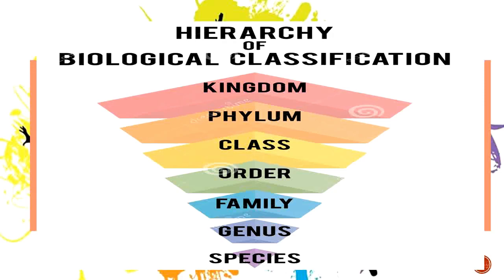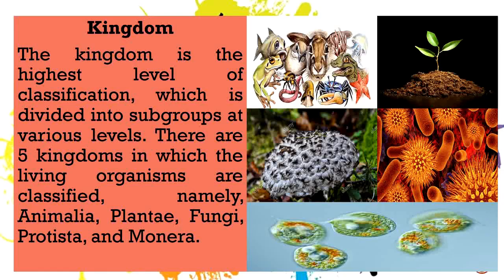Let's start from the highest, which is the kingdom. The kingdom is the highest level of classification, which is divided into subgroups at various levels. There are five kingdoms in which living organisms are classified, namely Animalia, Plantae, Fungi, Protista, and Monera. The highest in the hierarchical classification is the kingdom.